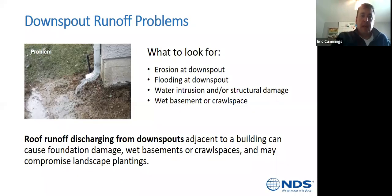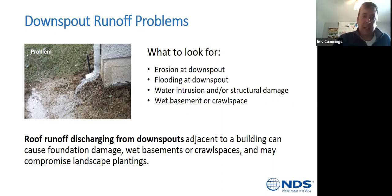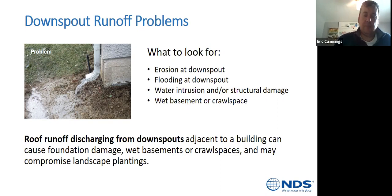Downspout runoff problems — everybody's seen this before where you've got massive erosion at the bottom of a downspout because the water is blowing out all the vegetation and soil underneath, causing issues in the basement and preventing anything from growing in that area. Roof runoff discharging from downspouts adjacent to the building can cause foundation damage, wet basements, and crawl spaces.